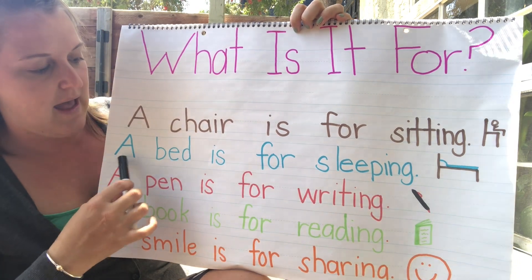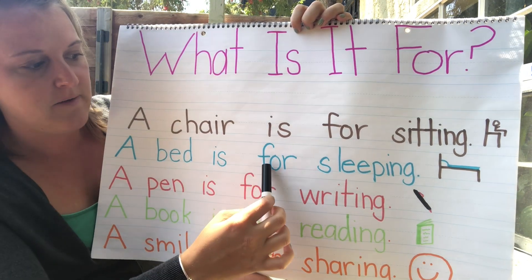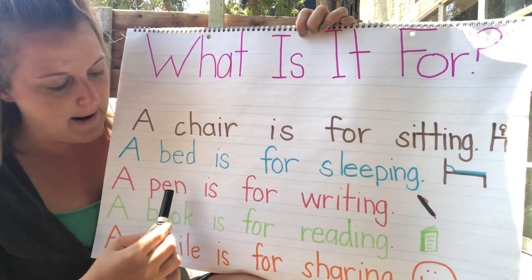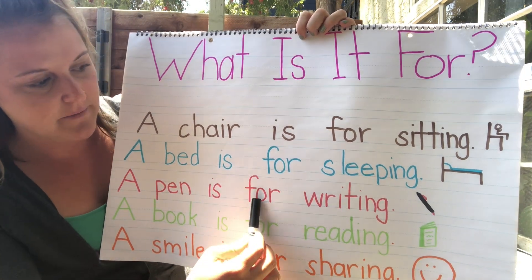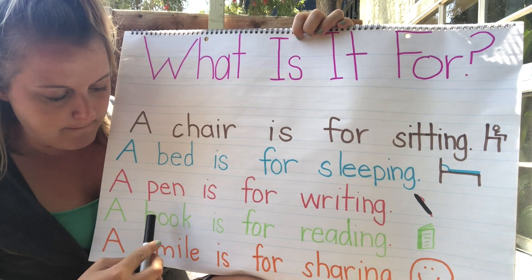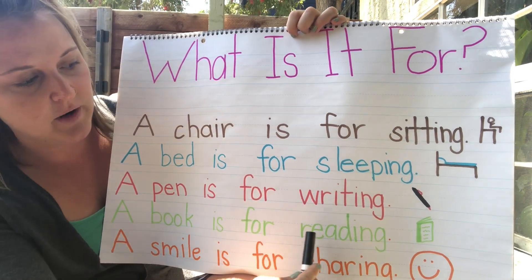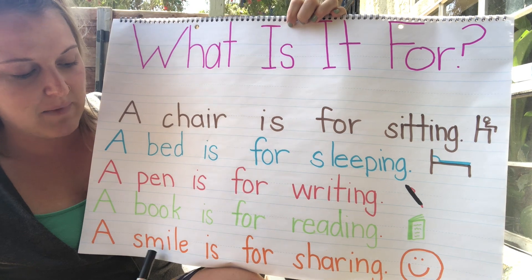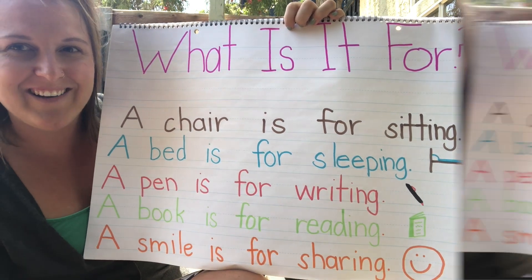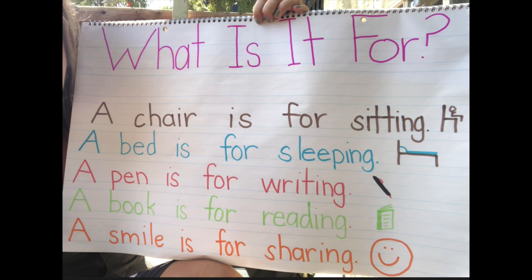All right, lion cubs. Now it's your turn. Pause the video and read through the fluency one time. Then look for all of the times you see the word 'for' and point to them. Read it one more time and then unpause the video and meet me back.